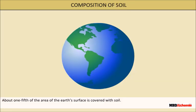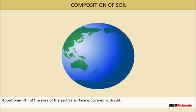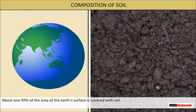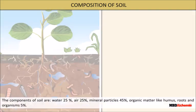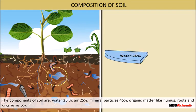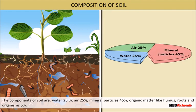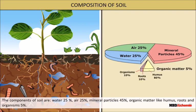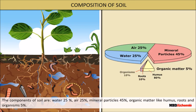Composition of soil: About one-fifth of the area of the earth's surface is covered with soil. The components of soil are water 25%, air 25%, mineral particles 45%, and organic matter like humus, roots and organisms 5%.